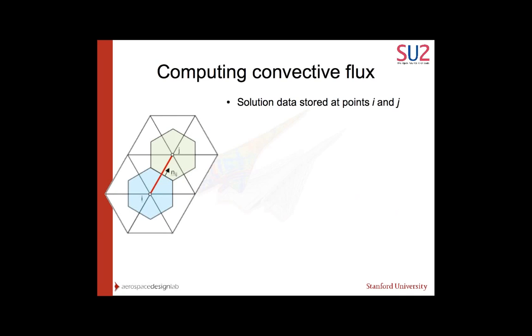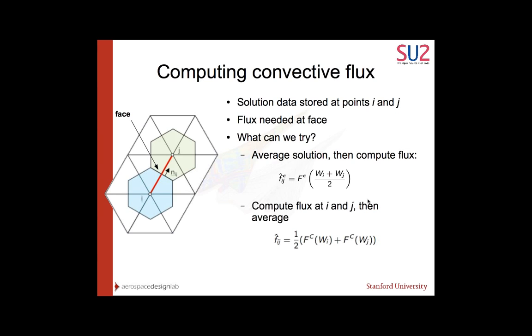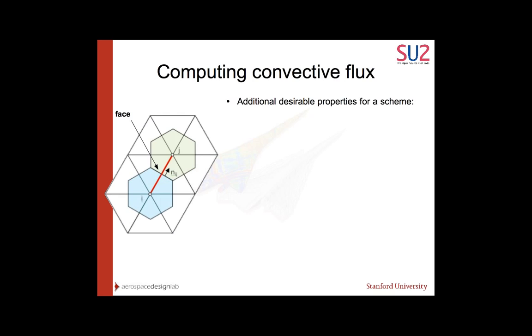How do we compute the convective fluxes? Using our initial guess, or at some iteration, we have solution data located at points i and j. We need the fluxes at this face between i and j. What can we try? One thing we could do is just average the solution, wi plus wj divided by two, and then compute the flux. Another thing is to first compute the flux at i, then compute the flux at j, and average that. These simple ideas don't really work well for convection. You want better properties from your numerical scheme. You want a scheme that's stable, uses upwinding, captures shocks, has low dissipation in smooth regions, and higher order accuracy.